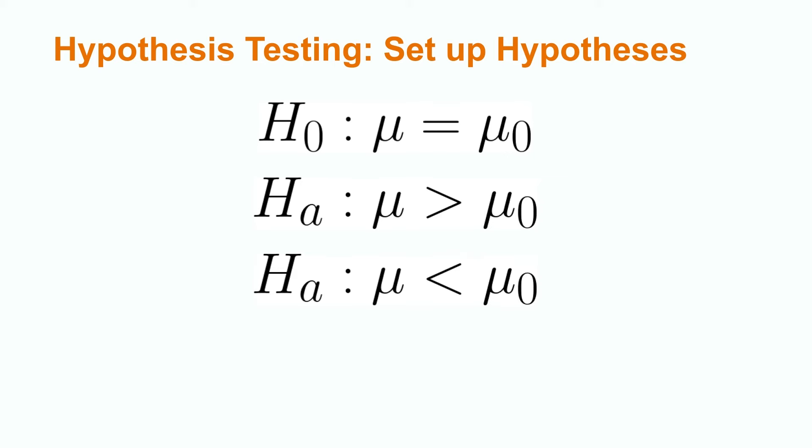A hypothesis is left-tailed if we want to say that our observed value is less than our hypothesized value and is denoted by Hₐ: μ < μ₀.